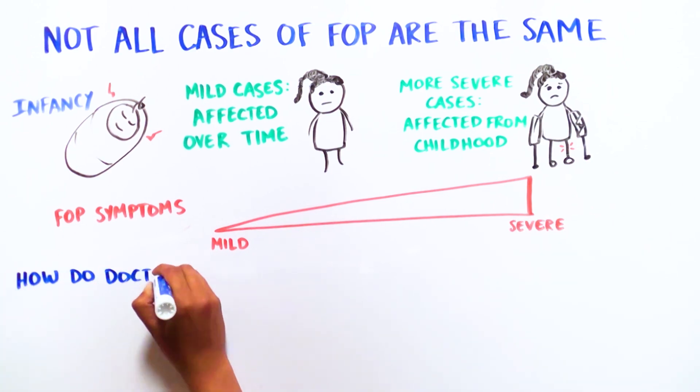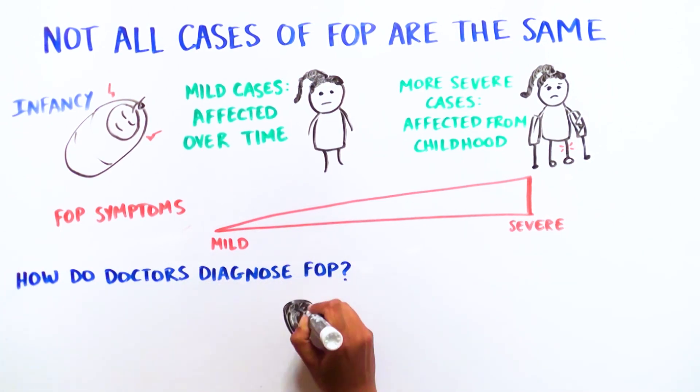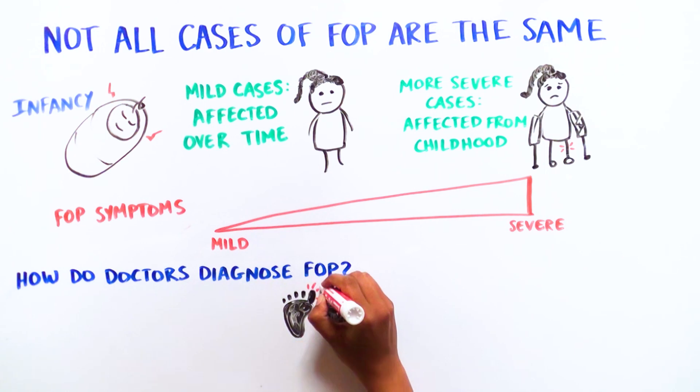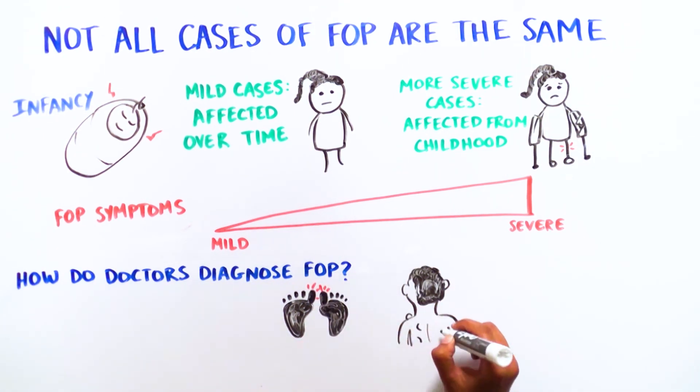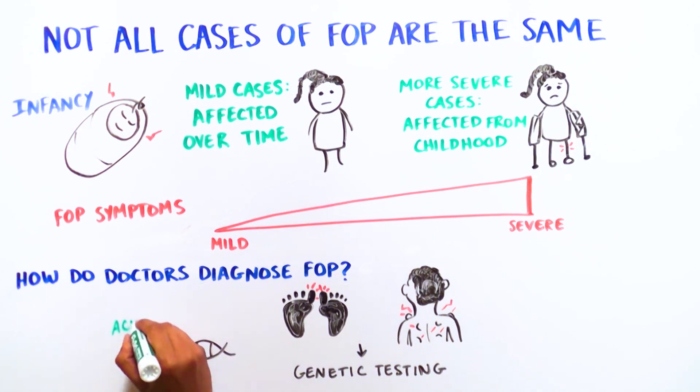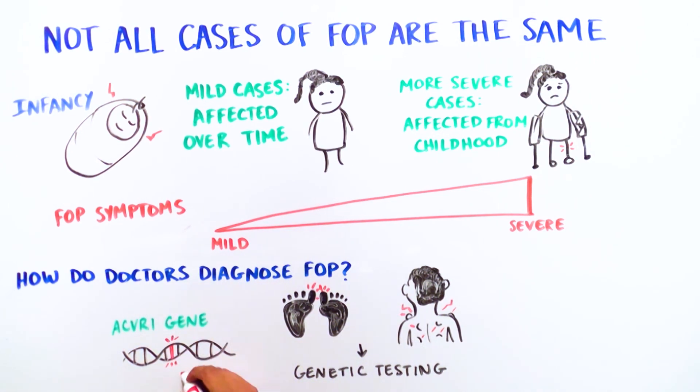How do doctors make a diagnosis of FOP? Usually, this is done based on observing the child's big toes and the swellings and bumps in their head, neck, and back. Eventually, this is followed by genetic testing to see if the ACVR1 gene contains one of the mutations known to cause FOP.